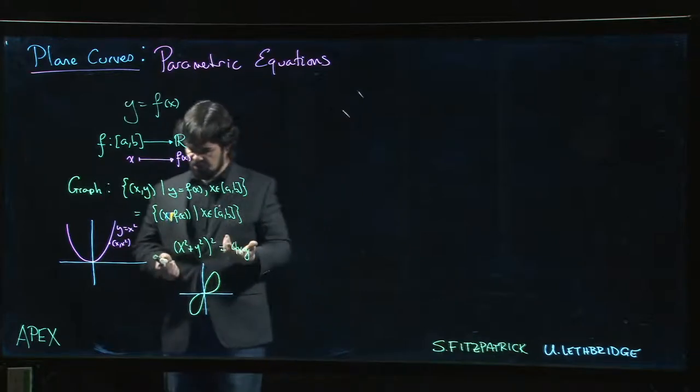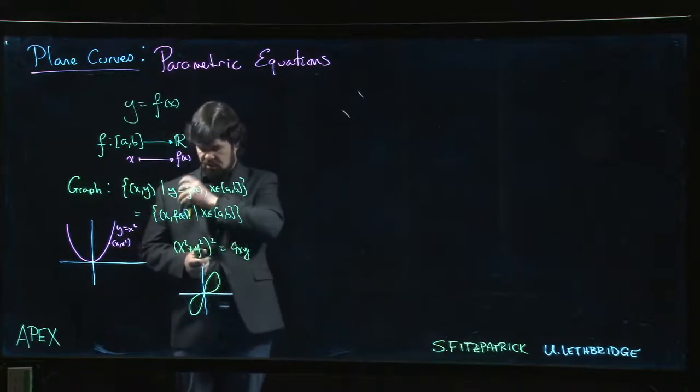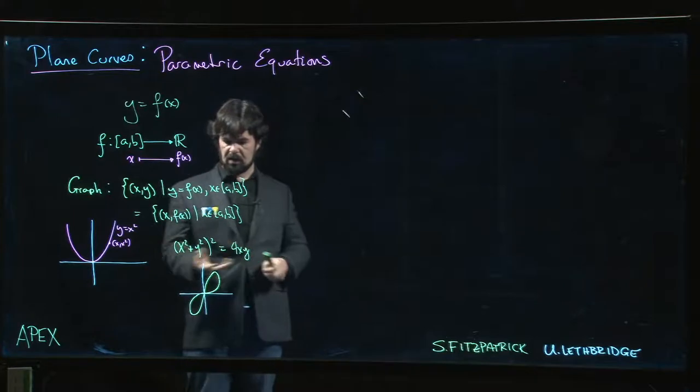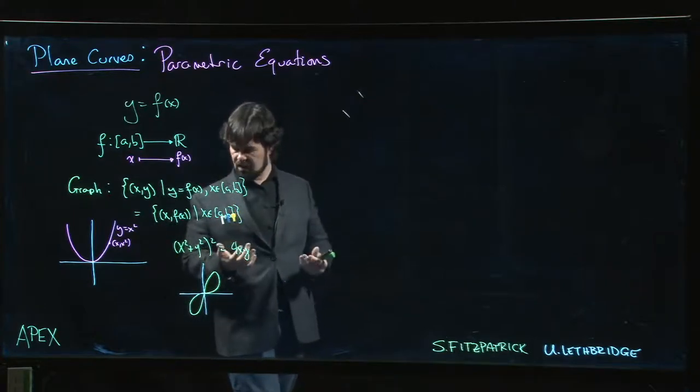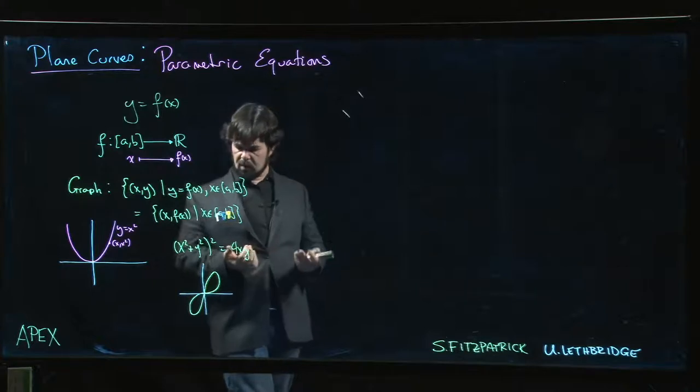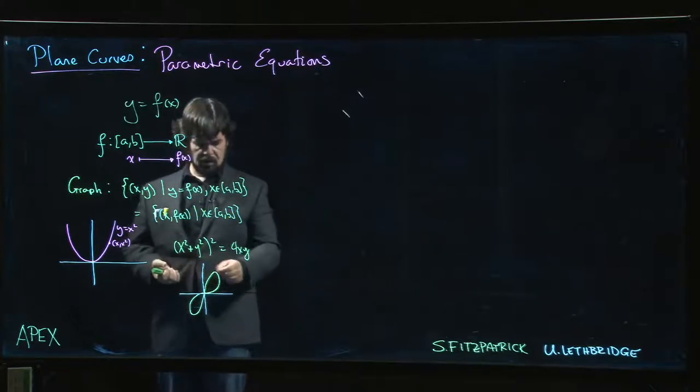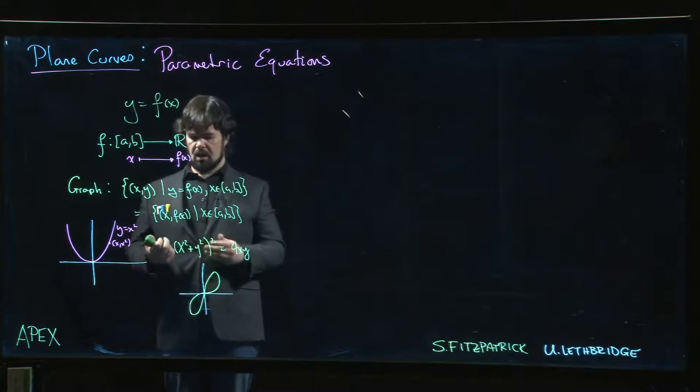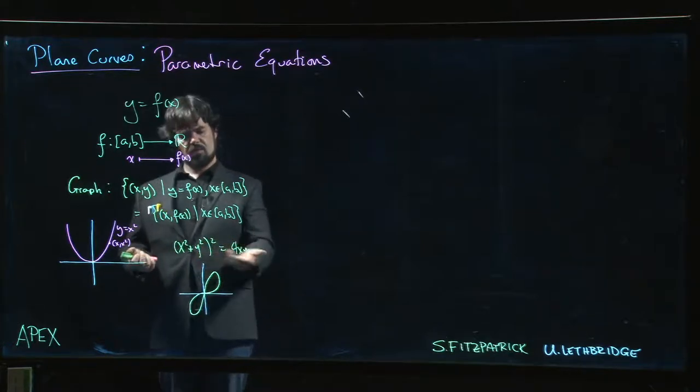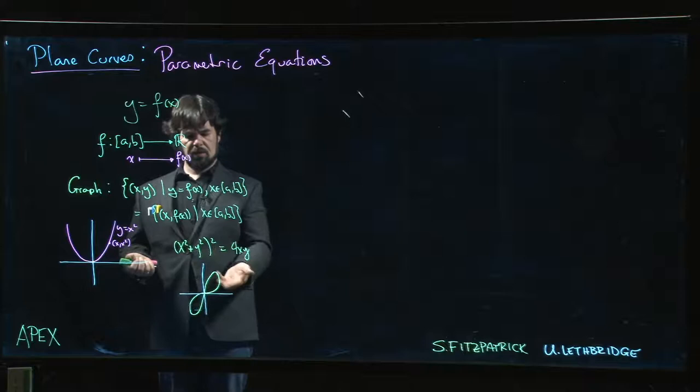The trouble with defining curves implicitly, I mean you can get a lot of interesting curves that way, but these types of equations are difficult to analyze. It's hard to, for example, one thing that's difficult here is how do you come up with points that satisfy the equation?